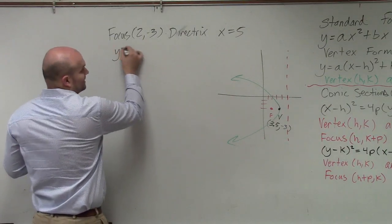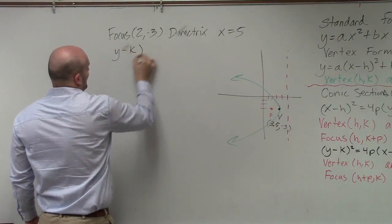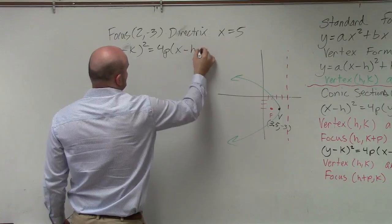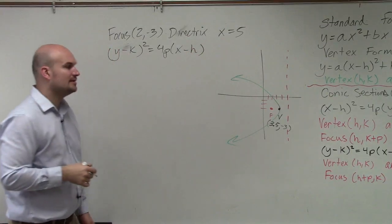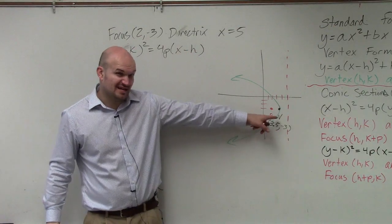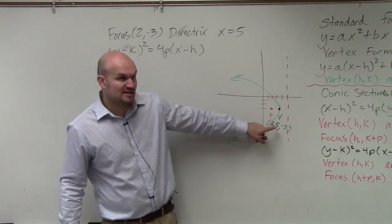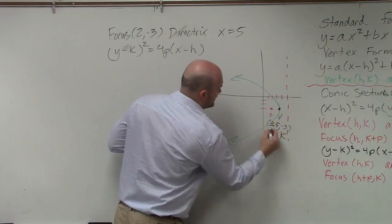And we have y equals, I'm sorry, y minus k squared equals 4p times x minus h. Now, we identified our vertex. We had to find the coordinate point for the vertex. So the coordinate point for my vertex, this is my h, and that's my k.